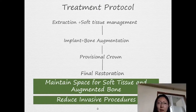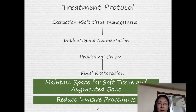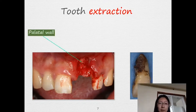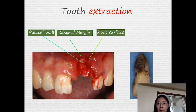So that gives rise to the new protocol. During the extraction, we use some soft tissue management, and when we do implant placement, we can combine the bone augmentation — so here we have only two invasive steps. This is the tooth extraction. After the extraction, we can see the palatal wall and the apically positioned gingival margin and exposed root surface of the lateral incisor.